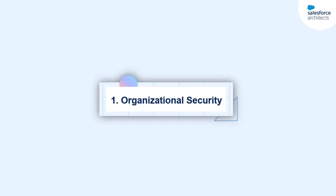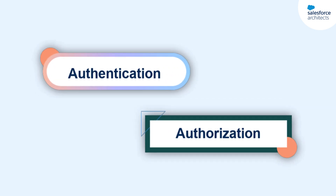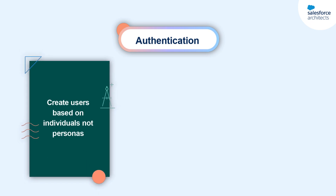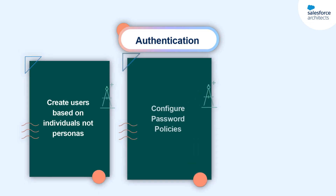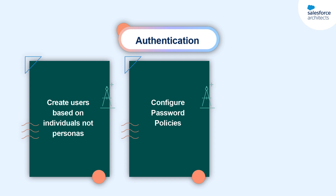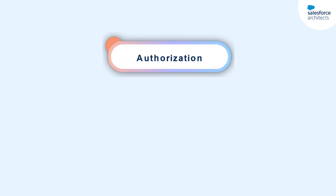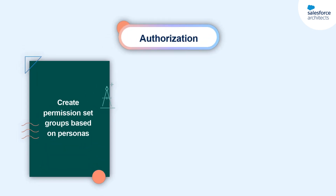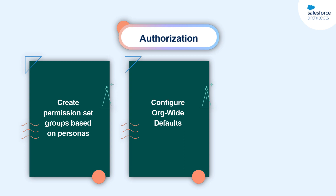You can build better organizational security by focusing on authentication and authorization. Authentication is the process of verifying the identity of a user who wants to access your system. As architects, we control authentication by creating Salesforce users based on individuals, not personas, configuring password policies, configuring single sign-on, and more. Authorization, on the other hand, is the process of determining the features, functionality, and data a user can access once they've been authenticated. As architects, we control authorization by configuring persona-based groups, using permission sets, using org-wide defaults, and configuring OAuth scopes for connected apps.